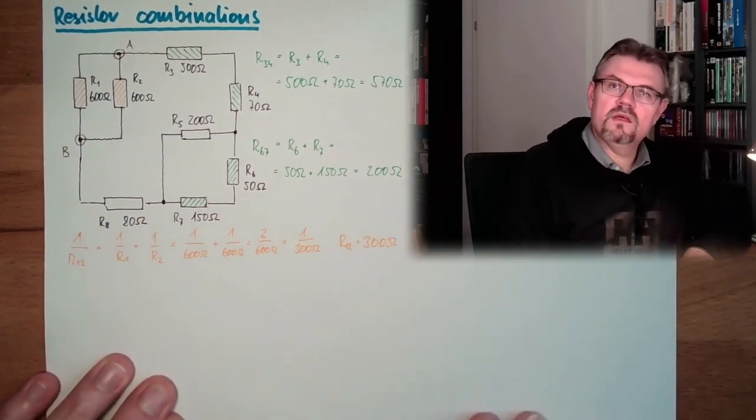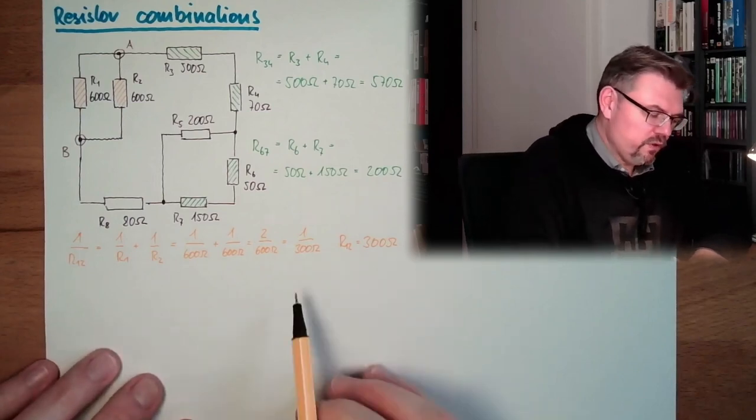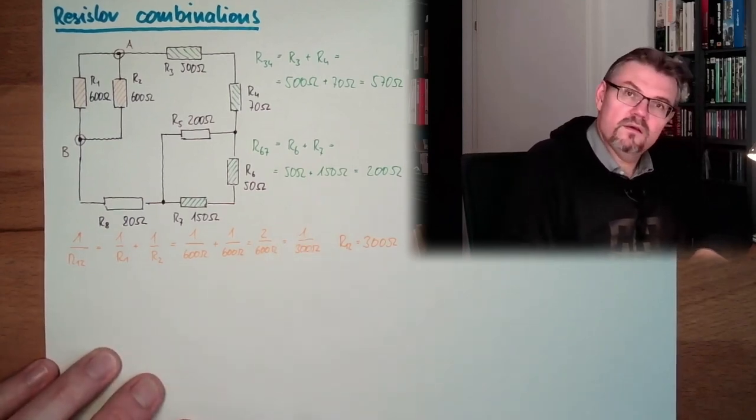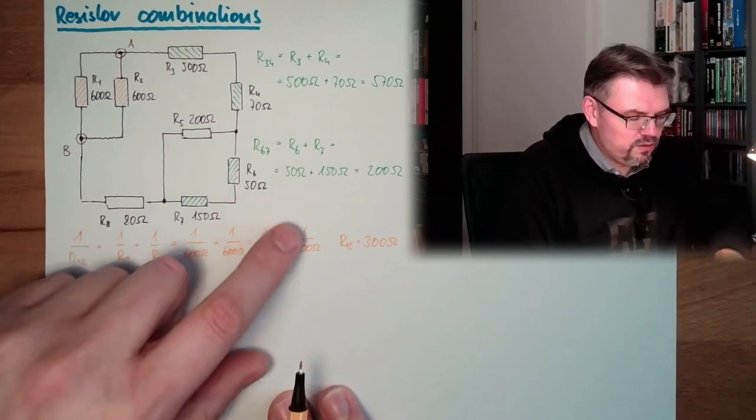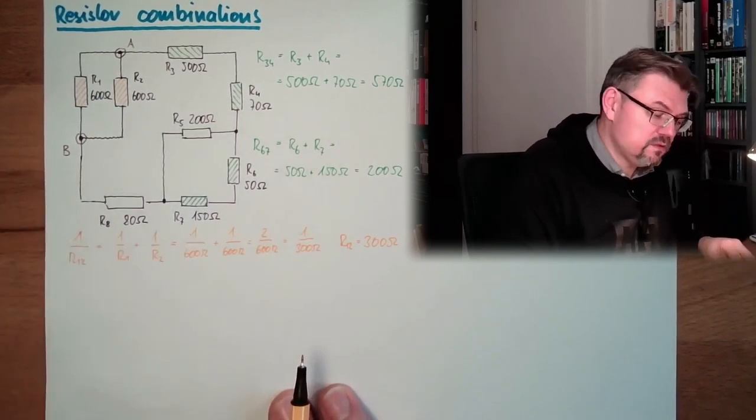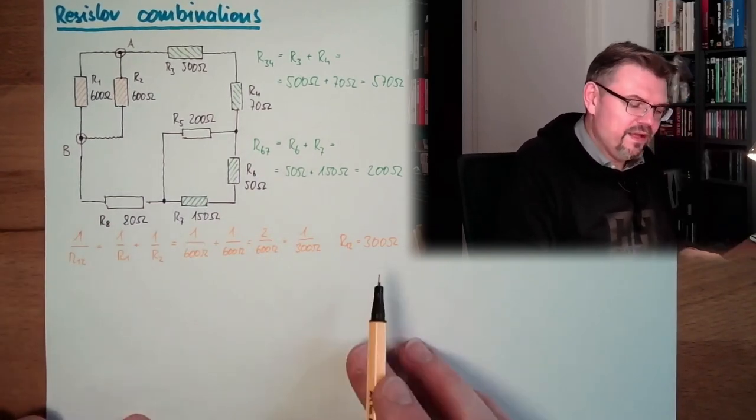So R12 is 300 ohms. This was convenient. We did not need a calculator because it turned out pretty fine. 1 divided by R12 is 1 divided by 300 ohms, so it's 300 ohms. Perfect. It's the half.